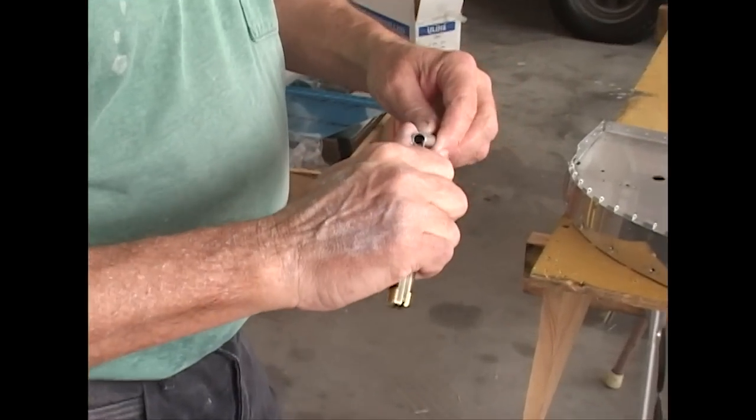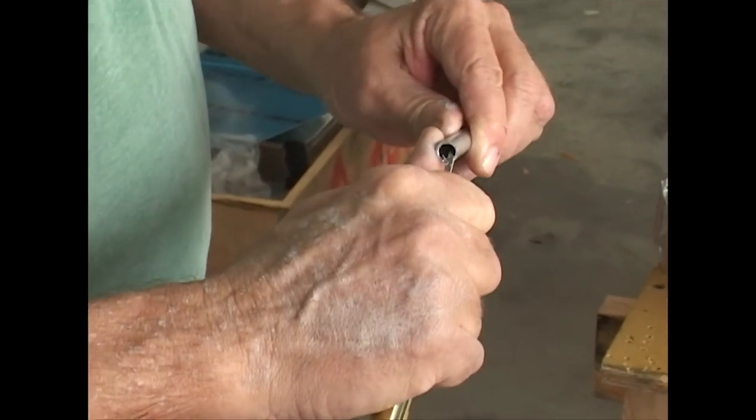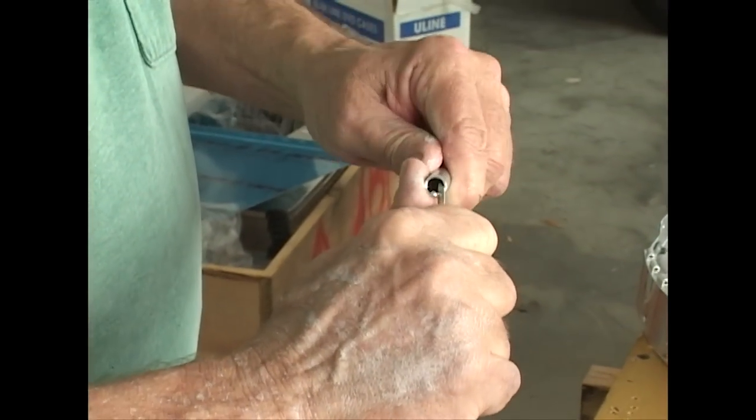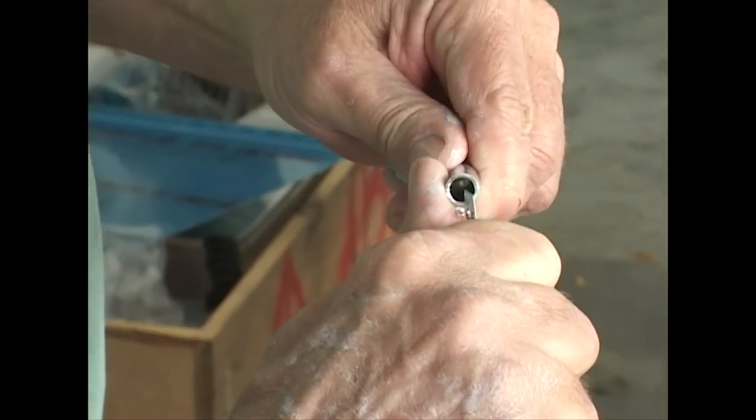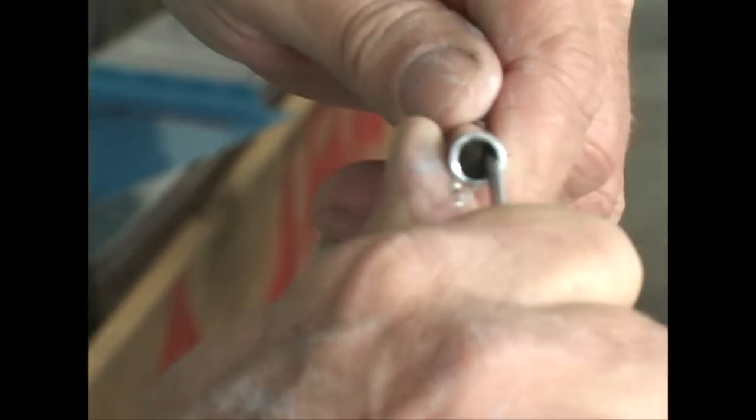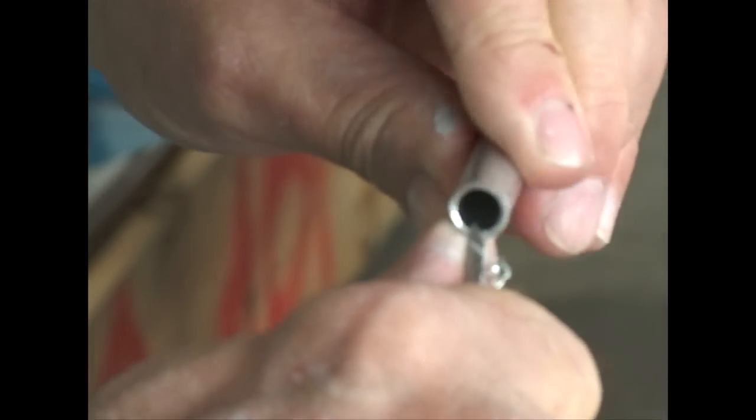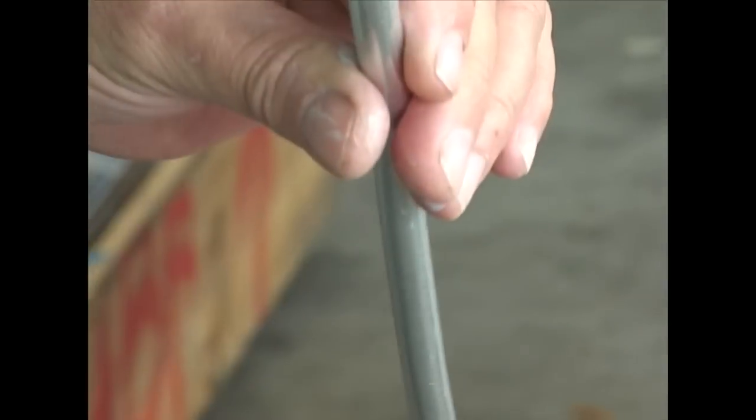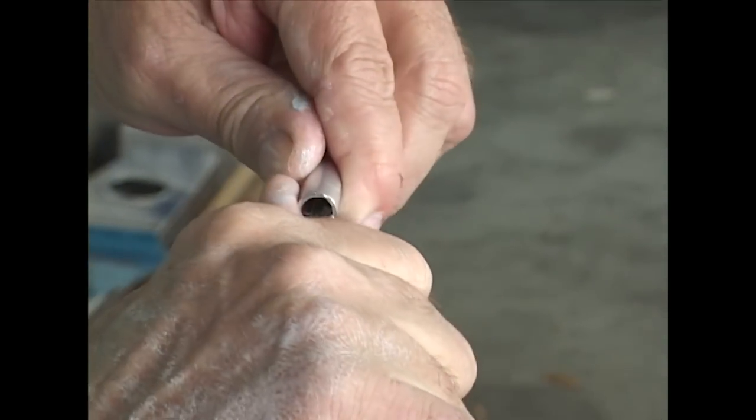The best way to deburr this is to use a knife and just get in there, take it at about a 45. And as long as you get that chip to come out, you don't have to worry about contaminating the inside of the tube with filings.